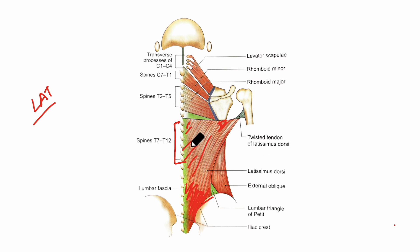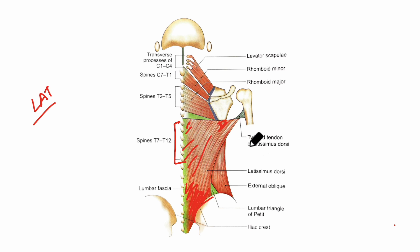Now looking at the insertion of the latissimus dorsi: the muscle winds around the lower border of the teres major muscle and forms the posterior fold of the axilla. The tendon is twisted upside down and is inserted into the floor of the intertubercular sulcus of the humerus bone.